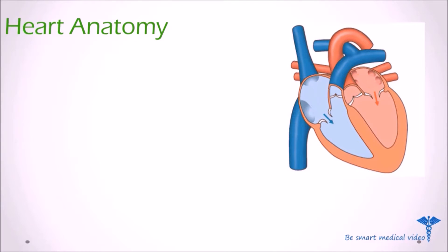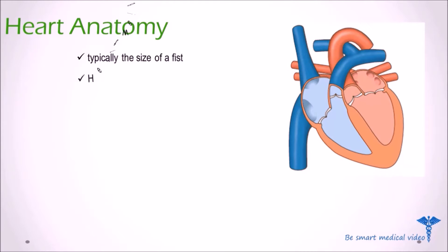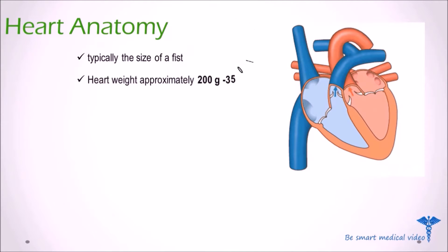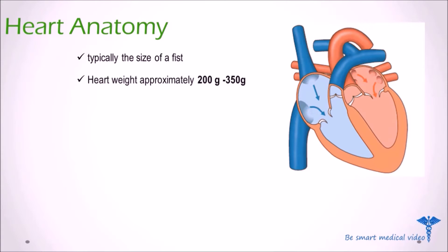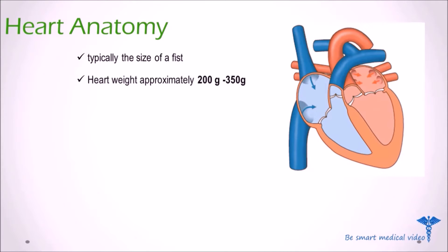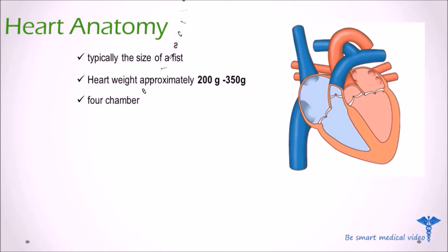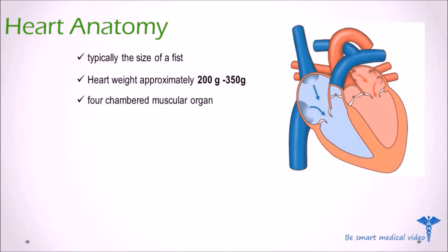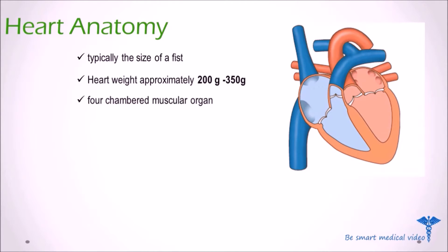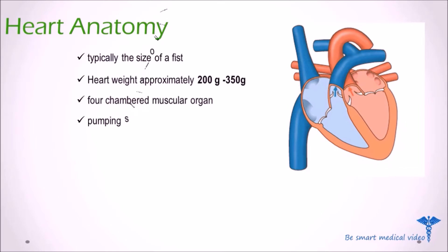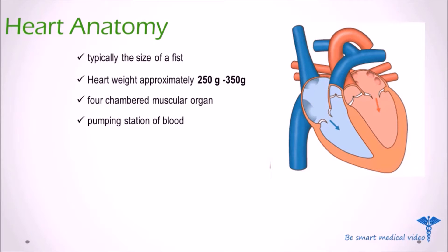The heart is typically the size of a fist. The weight of an adult heart is approximately between 200 grams to 350 grams. The human heart is a four-chambered muscular organ in the body that pumps blood through the network of arteries and veins, also known as the pumping station of blood in the body.